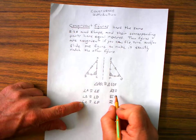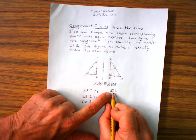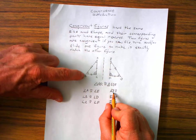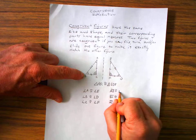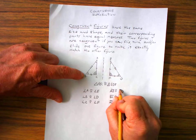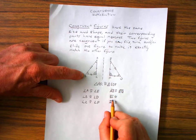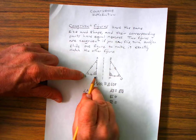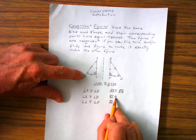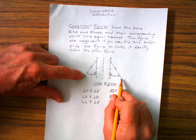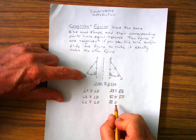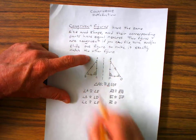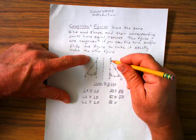Line segment AB from here to here is congruent to line segment ED. So I'd write ED with a line over it. Line segment BC is congruent to line segment DF. Line segment AC is congruent to segment EF.